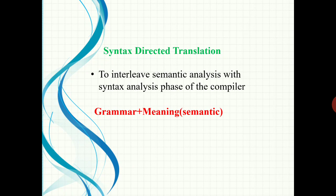In a syntax-directed translation, along with the grammar we associate some informal notations, and those notations are called semantic rules. In addition to the grammar, we associate these semantic rules, and it becomes a syntax-directed translation. So we can say that SDT — syntax-directed translation — is a combination of grammar and some semantic rules.